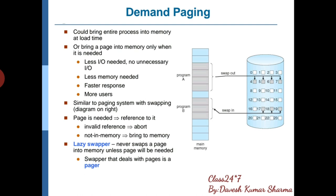Demanded means — in virtual memory you have a physical memory, that is the main memory. It is smaller. If your logical memory is large, then swap in and swap out process can be implemented. It will be an illusion that you have a larger main memory. But this is the demand paging.